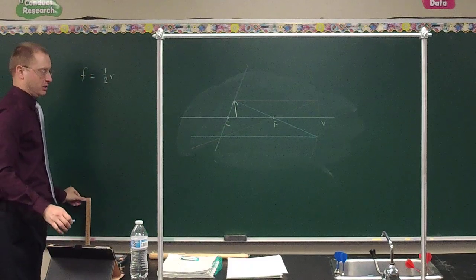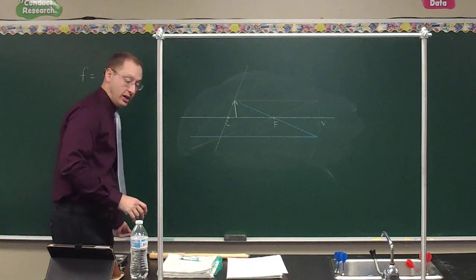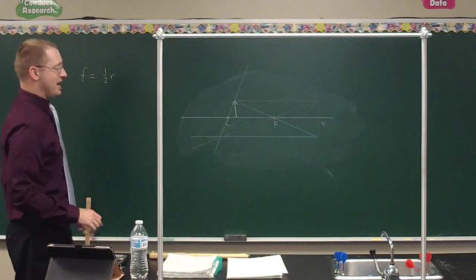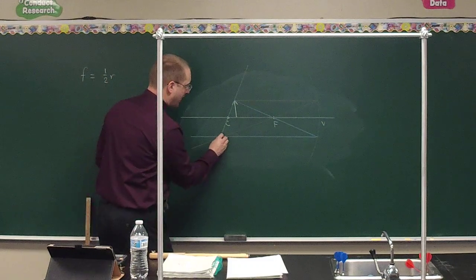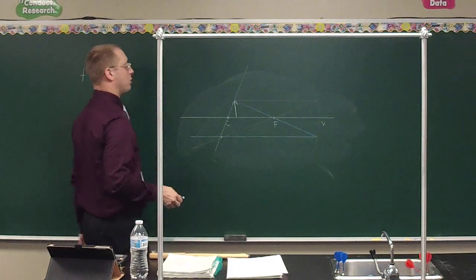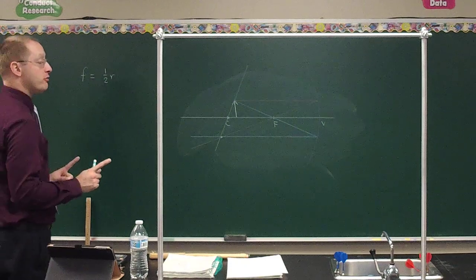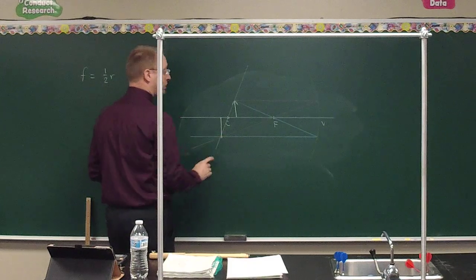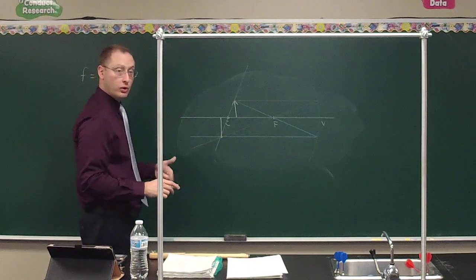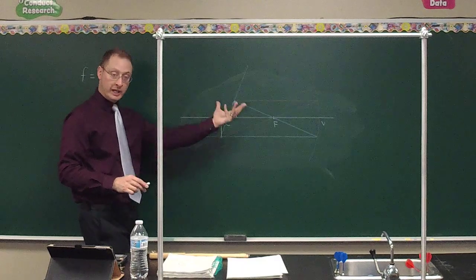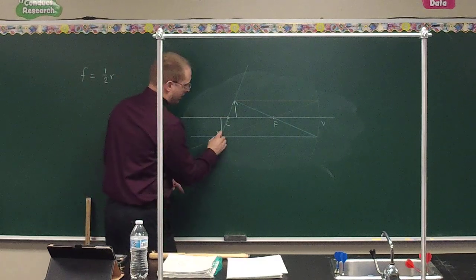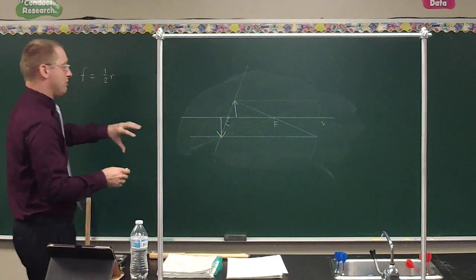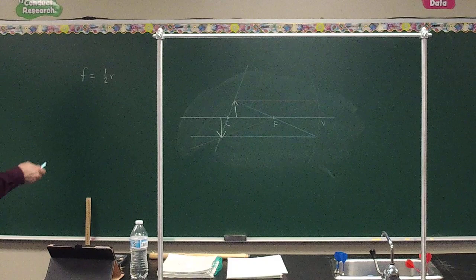These three rays don't perfectly converge for me, but they're very close — they may perfectly converge for you. The green ray is just kind of out there, but the three of them intersect right around this point. They do actually converge, meaning the image we get here is a real image, because the light really reflects off and converges. The image is flipped over — it's inverted.